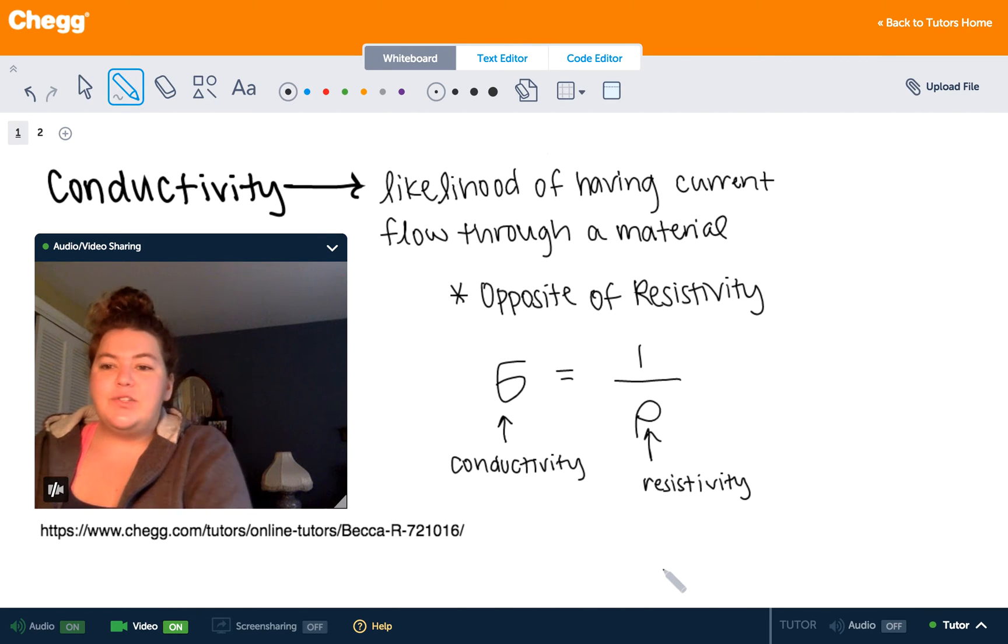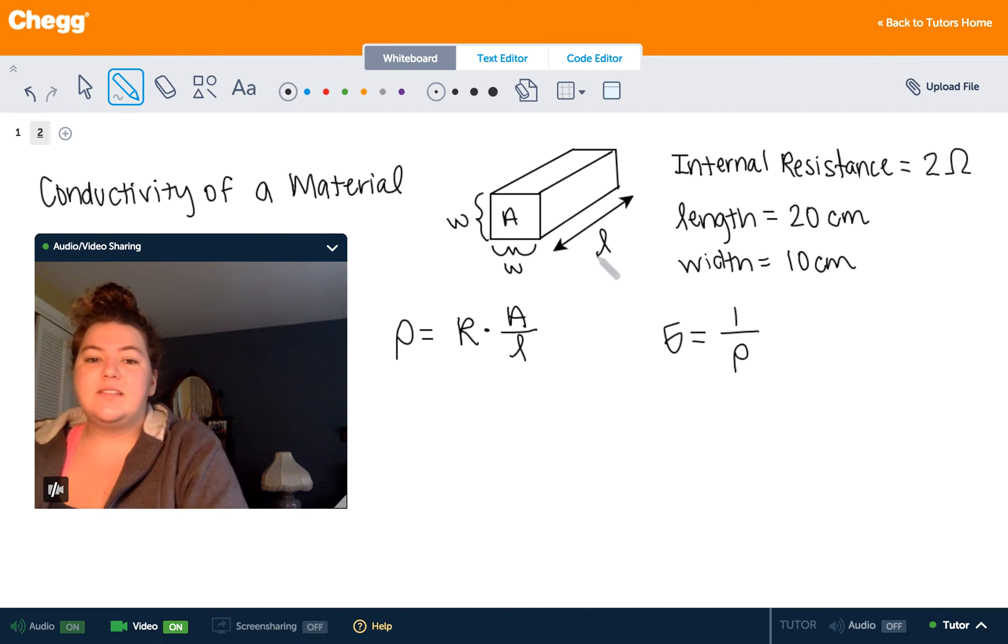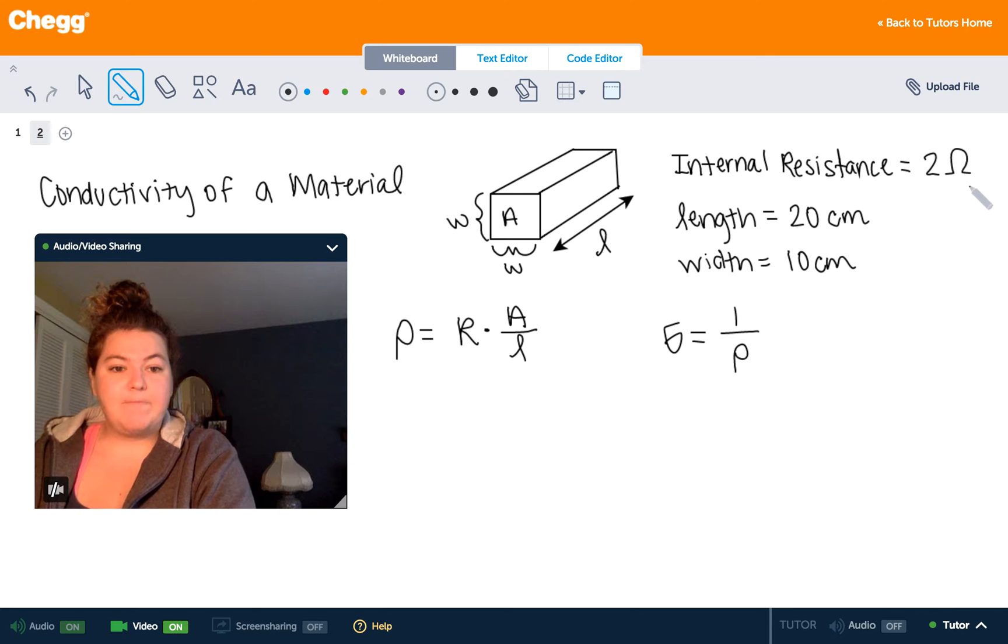So how do we do that? If we have this slab of material right here, that has an internal resistance of two ohms, a length of 20 centimeters here, and a width of 10 centimeters right here.